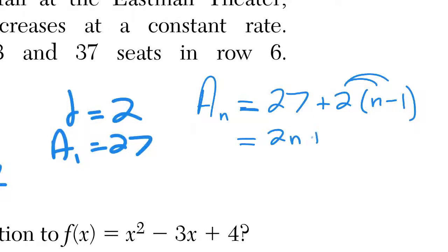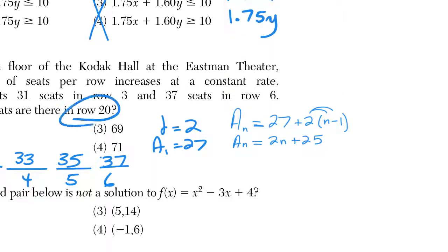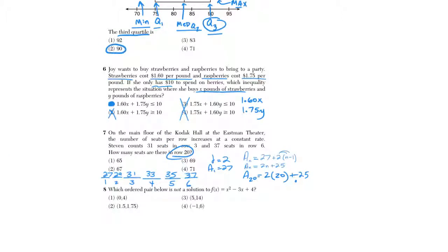Now if I want to find a₂₀, because I said how many would be in row 20, very simply, since I have the explicit rule, this is why we did all this work to make it easy in the end. We just plug in a 20, and that should say 25, not 5. And when we plug this in, we're going to get 40 plus 25, which is going to give us our final answer of 65, choice 1.